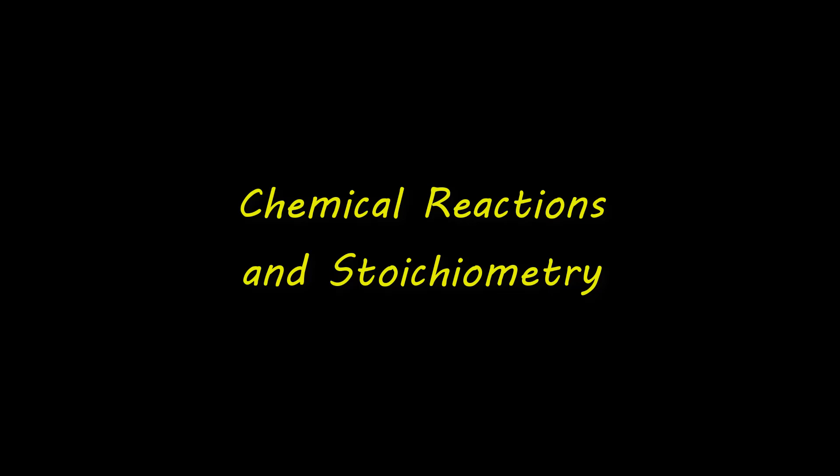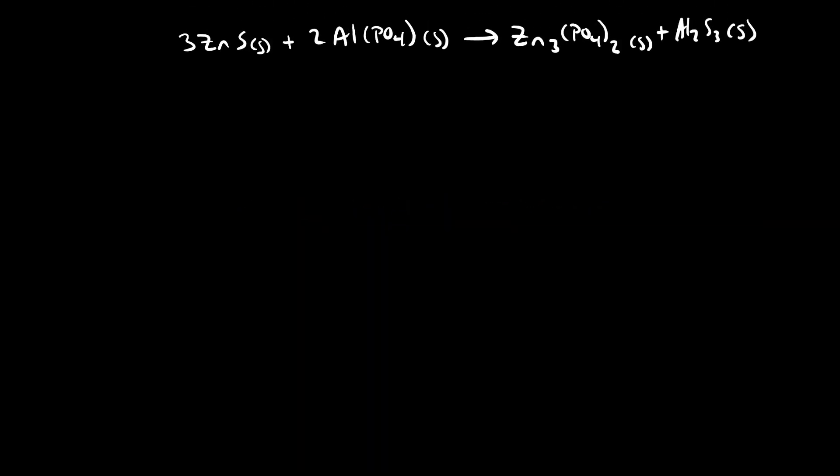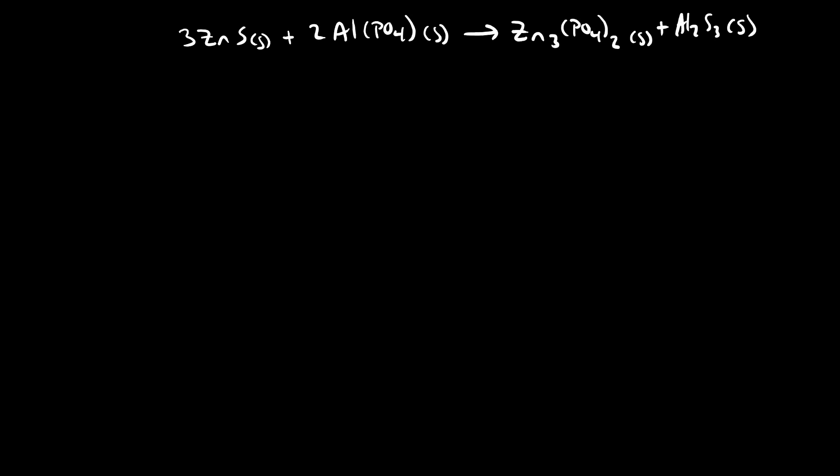In the previous video we learned how to balance chemical reactions, and that's a really important step in figuring out how much we can produce when we mix together reactants. The point of this video is to start thinking about using balanced chemical reactions to predict how much product we can make if we start with a certain amount of reactant. Let's start off with a balanced reaction — the double displacement reaction between zinc sulfide and aluminum phosphate.